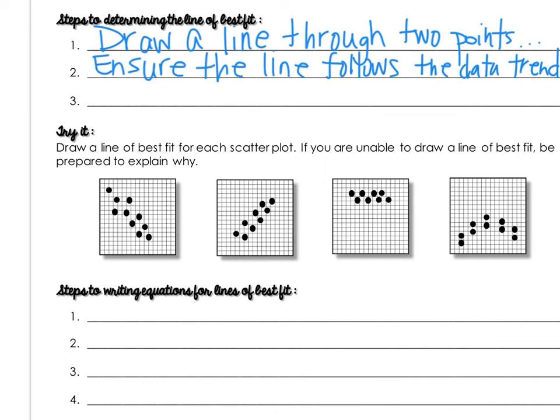A common mistake that students make is to draw a line that goes through two points, like I'm going to do it down here on this example. Now yes, that line does go through two points, but is it following the trend of the data? No. So that's not a good line of best fit.